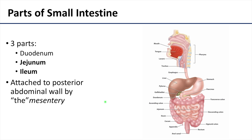The jejunum and the ileum are attached to the posterior body wall by the mesentery. There are various other mesenteries associated with the GI system, or folds of peritoneum, in the abdomen, but this mesentery is the most substantial and prominent — hence calling it "the" mesentery. Between the two layers of the mesentery are the superior mesenteric vessels, a variable amount of fat, autonomic nerves, and importantly lymph nodes.